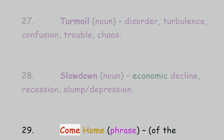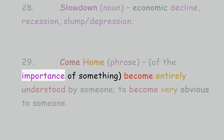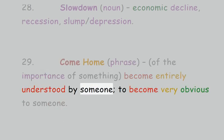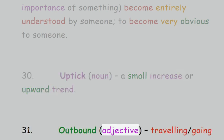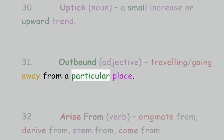29. Come home, phrase: of the importance of something, become entirely understood by someone, to become very obvious to someone. 30. Uptick, noun: a small increase or upward trend. 31. Outbound, adjective: traveling or going away from a particular place.